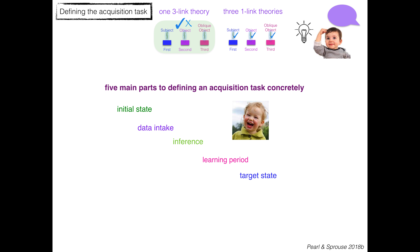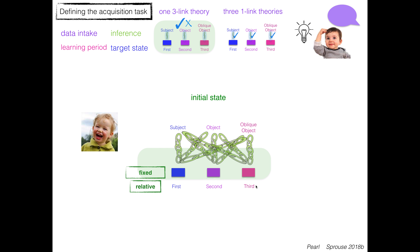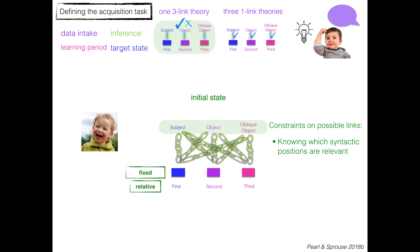There are five main parts to defining an acquisition task concretely. In the initial state, we have a bunch of knowledge already. One is the thematic intermediate representation — whether it's the fixed one or the relative one that maps in terms of how high one event participant role is relative to another. And then there are some constraints on possible links: in particular, you have to know which syntactic positions are relevant, so you only consider links that go to or from relevant syntactic positions of subject, object, and basically everything else — oblique objects.